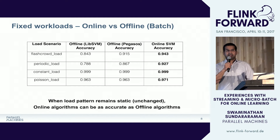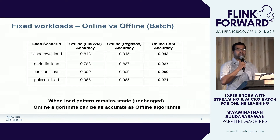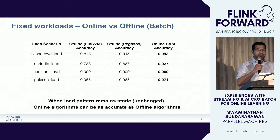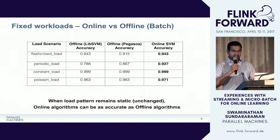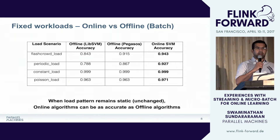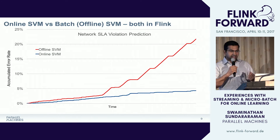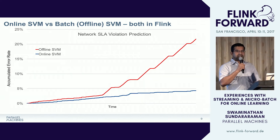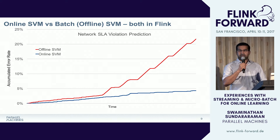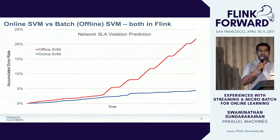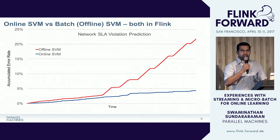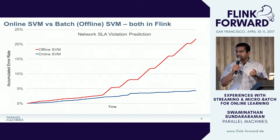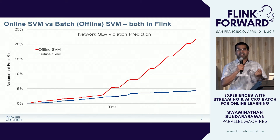Before the comparison, we wanted to understand how online algorithms perform compared to offline algorithms. We tried different load scenarios from this dataset, tried two different offline algorithms, and compared them with our online SVM algorithm's accuracy. From the table you can clearly see that for all different types of workloads we get the same or better accuracy than offline algorithms. Even when the workload does not change, online learning — since it learns faster — can adapt quickly and provide better accuracy.